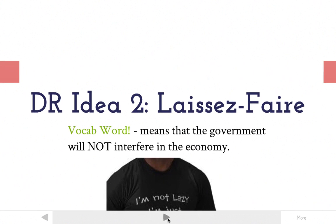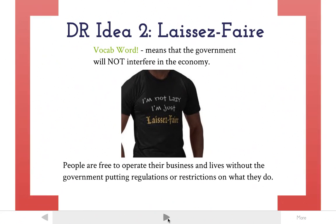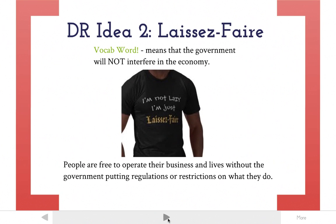Idea two was something called laissez-faire — it's a vocab word — and laissez-faire means that the government simply will not interfere in the economy, not interfere with businesses. People are going to be free to operate their businesses and lives without the government putting regulations or restrictions on what they do. A lot of Hamilton's policies involved getting really involved in the economy — that was Hamilton as a Federalist. Jefferson's going to do the opposite and leave the economy alone, not get involved, and let people do their thing without government regulations.